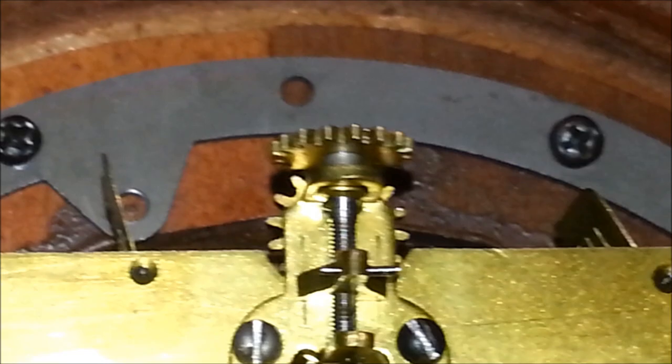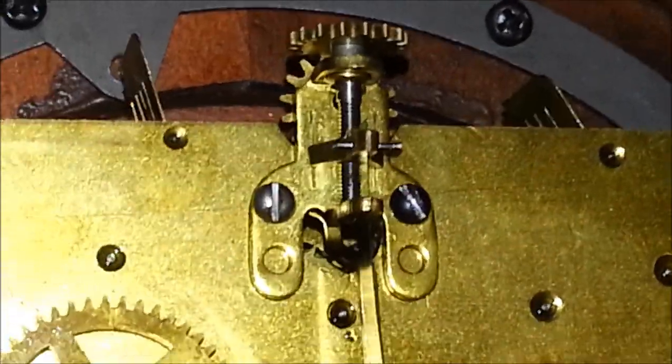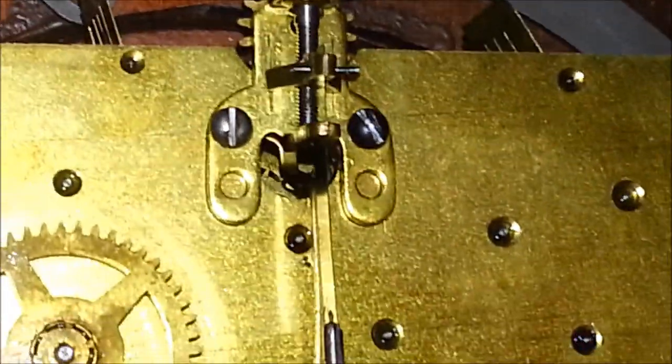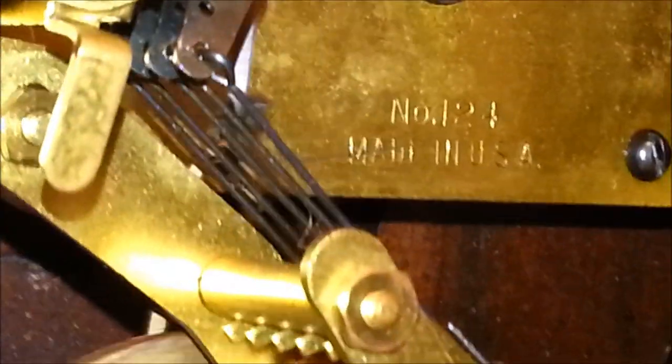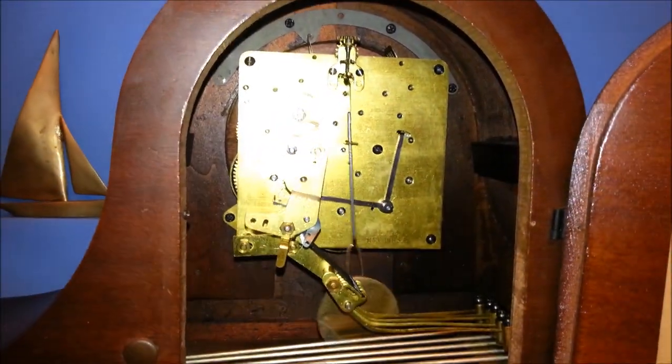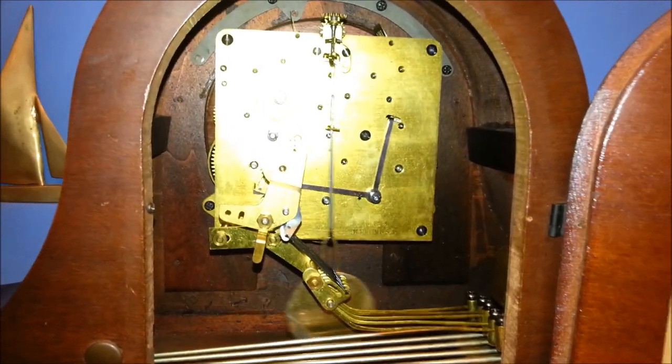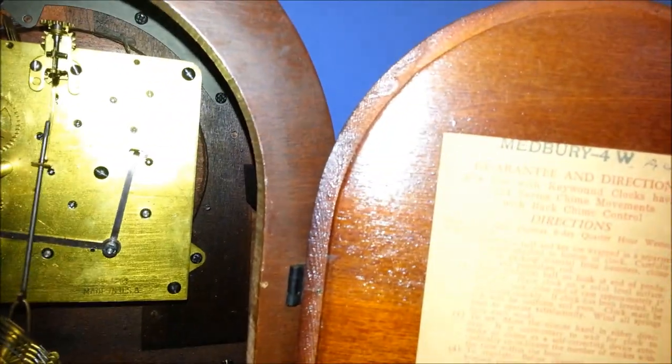There is where that arbor comes through to adjust the height of the pendulum. See, that spins as you spin the key, pulling the pendulum up slightly or down slightly, which would lengthen the stroke. And that is my Seth Thomas Medberry 4W.